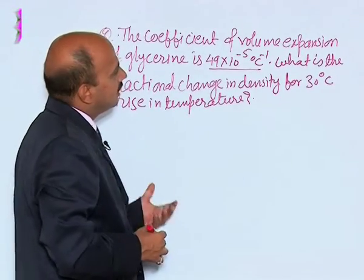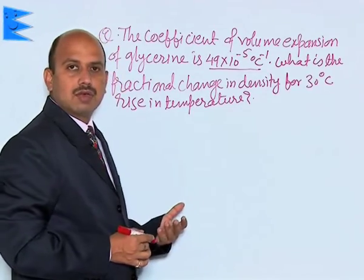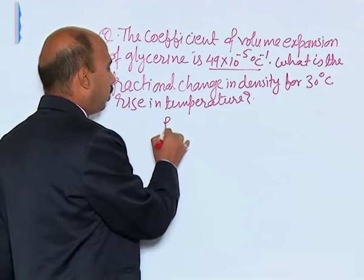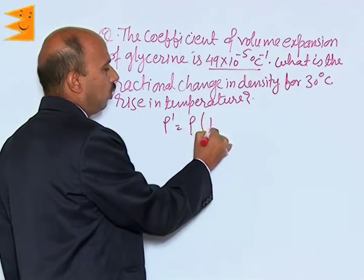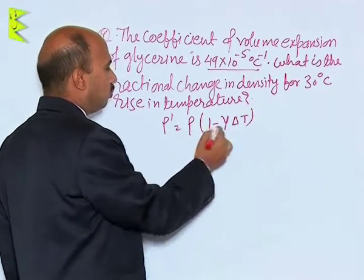You know when the liquid is heated its density decreases, and we have done this formula rho dash is equal to rho into 1 minus gamma delta T.